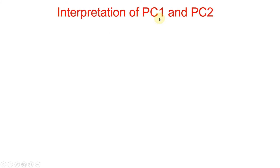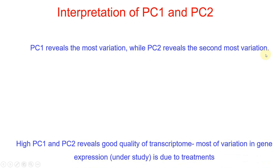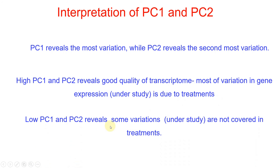Now let's interpret what we can understand from PC1 and PC2. PC1 reveals the most variation while PC2 reveals the second most variation. If a transcriptome has a high PC1 and PC2, it means the quality of the transcriptome is good because most of the variation in gene expression under study is due to only this treatment. But if transcriptomic data has low PC1 and low PC2, it means some variation is still not covered and there is a need to incorporate more treatments.